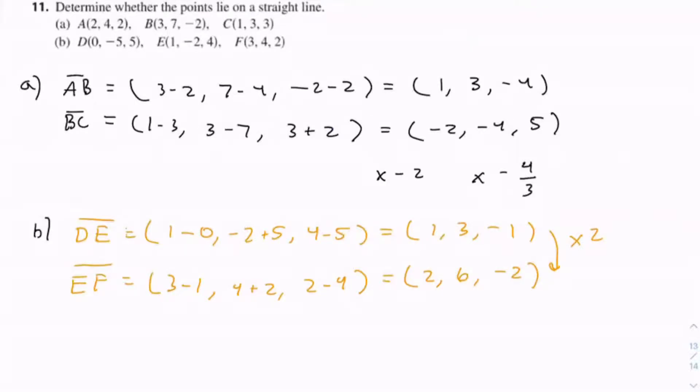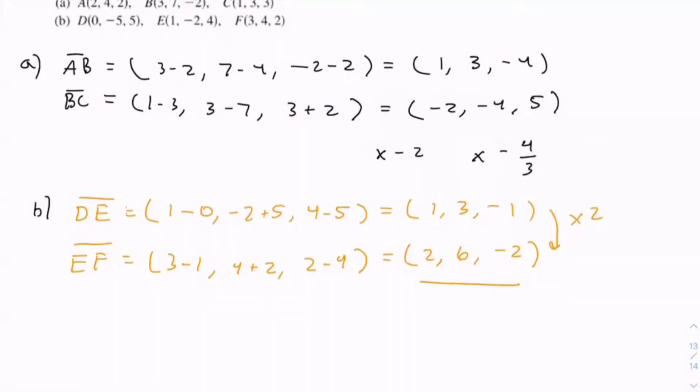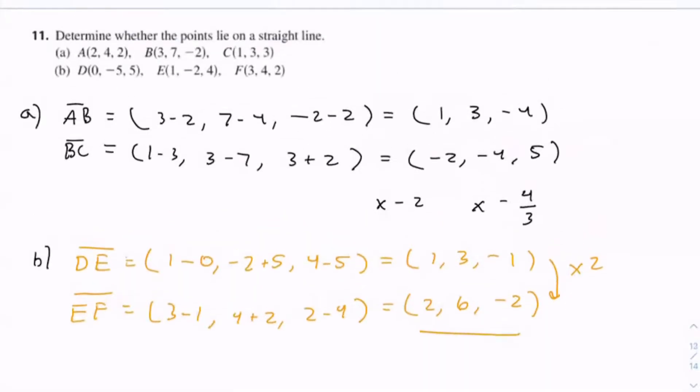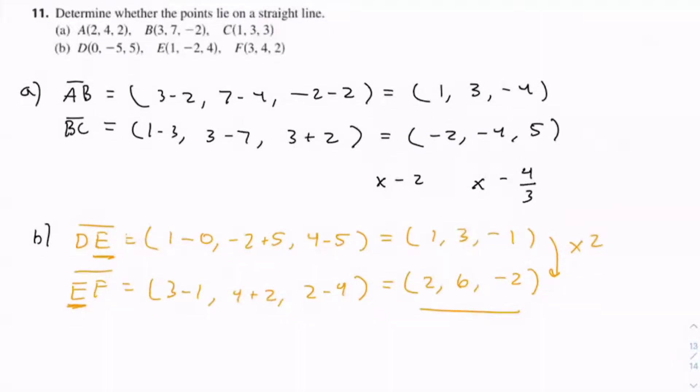So since they're scalar multiples, you would call these segments for now. But these are more of a vector than a segment. Since those are scalar multiples, the two are scalar multiples. And this ends and then it starts continuously. You can say it's on a straight line.